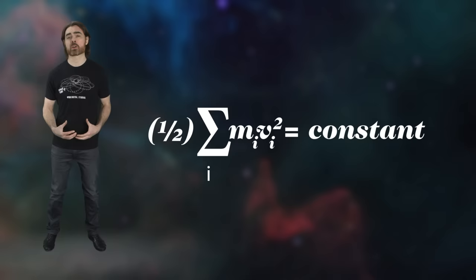At least assuming there's no friction and perfect bounciness. Leibniz called this early incarnation of energy vis-viva, the living force. Fun side note, Leibniz was famously a rival of Isaac Newton. Besides the whole co-inventing calculus thing, Leibniz's vis-viva was seen as a competition to Newton's idea of conservation of momentum.